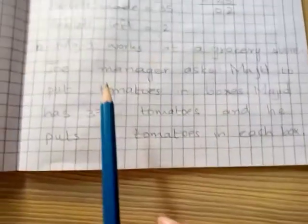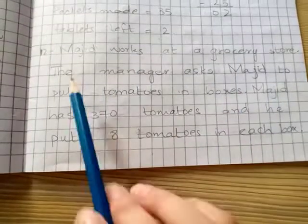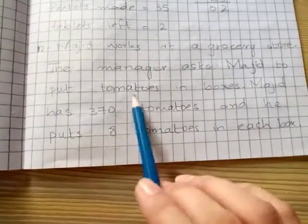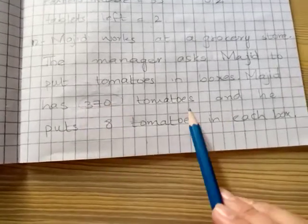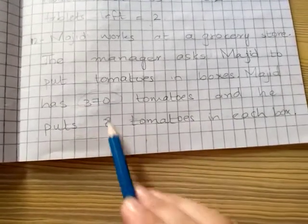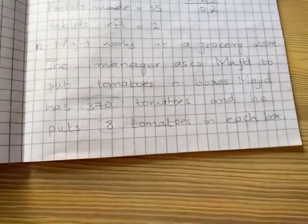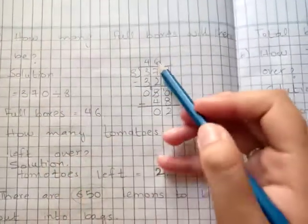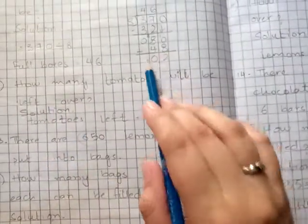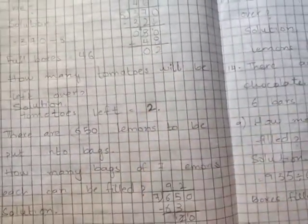Part number 12. Majid works at a grocery store. The manager asked Majid to put tomatoes in a box. Majid has 370 tomatoes and he put 8 tomatoes in each box. Then, how many full boxes will be there? So, 370 divided by 8, 46 full boxes will be made. And how many tomatoes will be left over? Remaining tomatoes are 2. Okay?